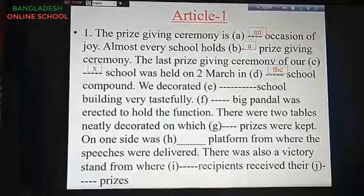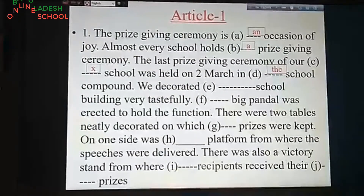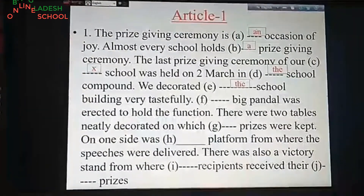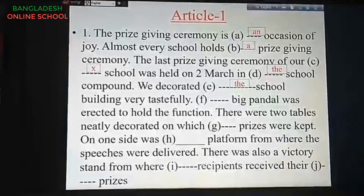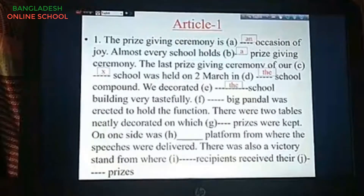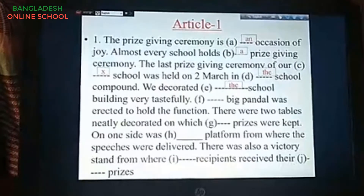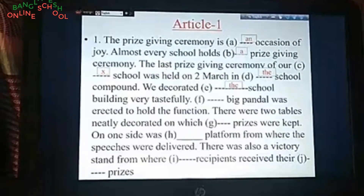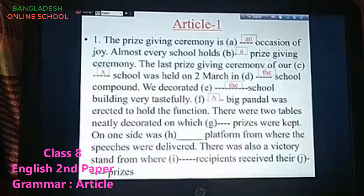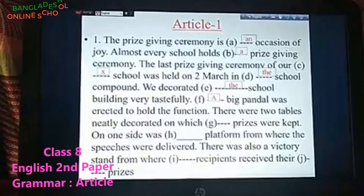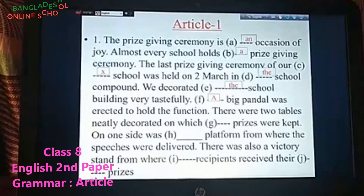Instead of the possessive 'our,' 'the' is used: 'We decorated the school building very tastefully.' For blank F, it gives an indefinite notion, so 'a' is used — 'A big panel was erected to hold the function.' For blank G: 'one on which [dash] prizes were kept' — prizes here give the sense of indefinite, and it is plural form, so a cross is used here — no article before plural indefinite nouns.